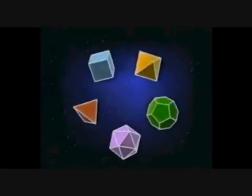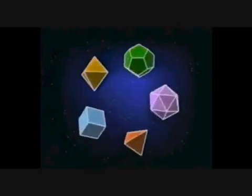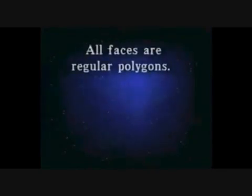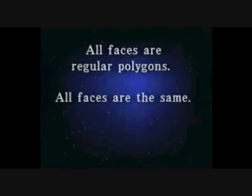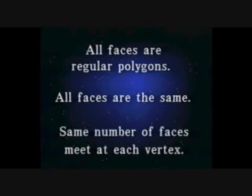Platonic solids are characterized by three properties. All faces are regular polygons. All faces are exactly the same, or congruent. And all corners are exactly the same — that is, the same number of faces meet at each vertex in exactly the same way.